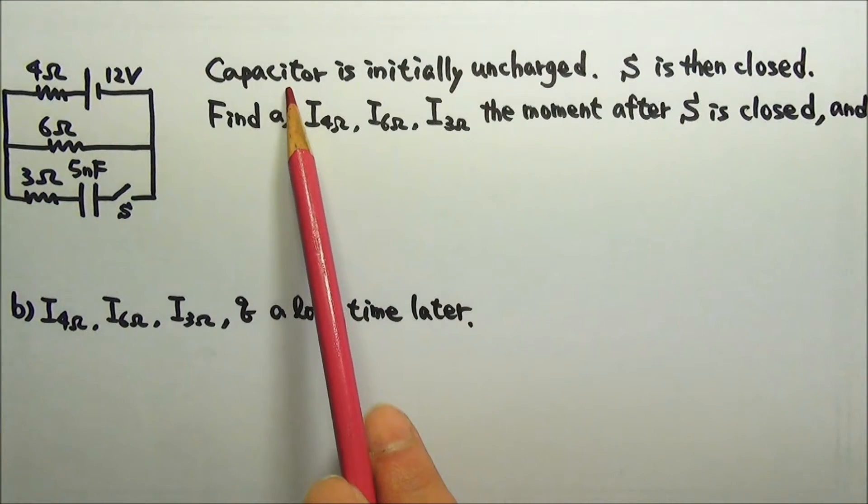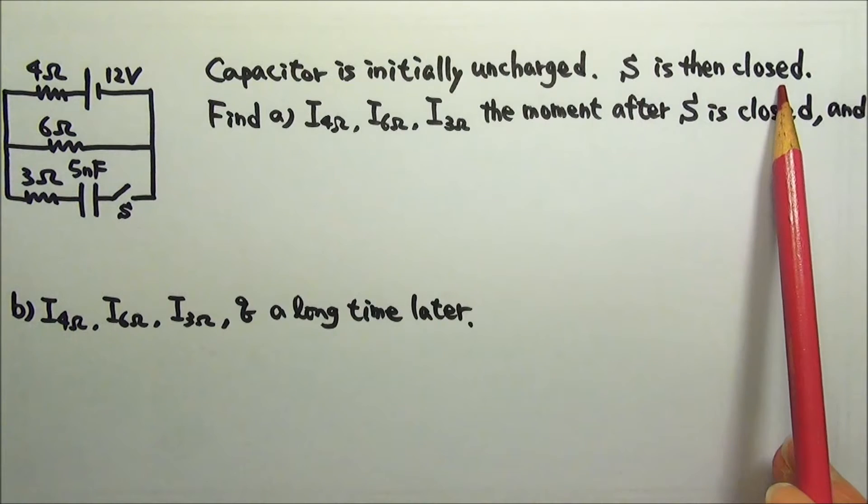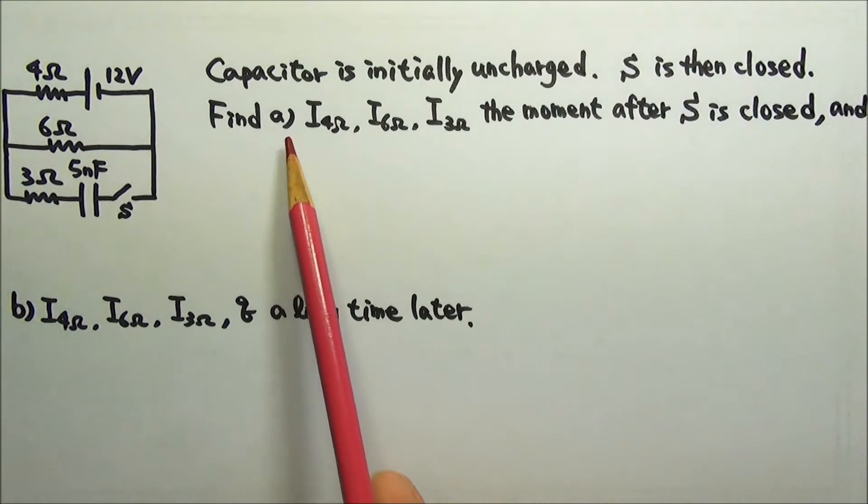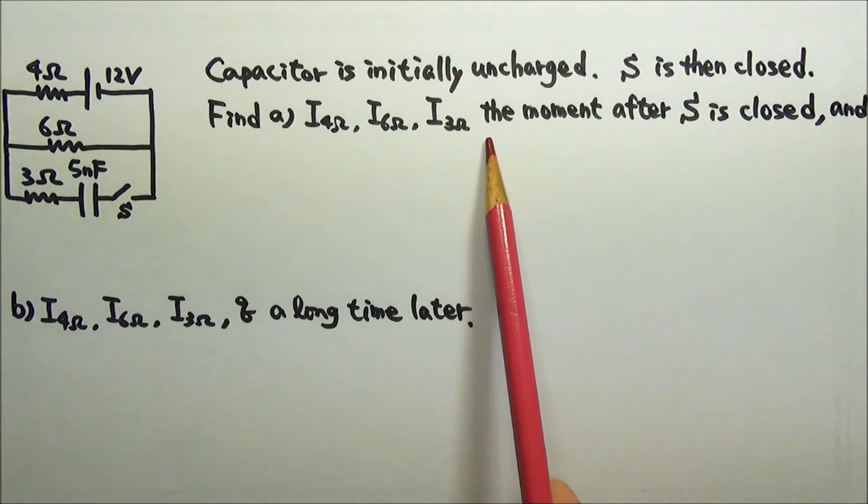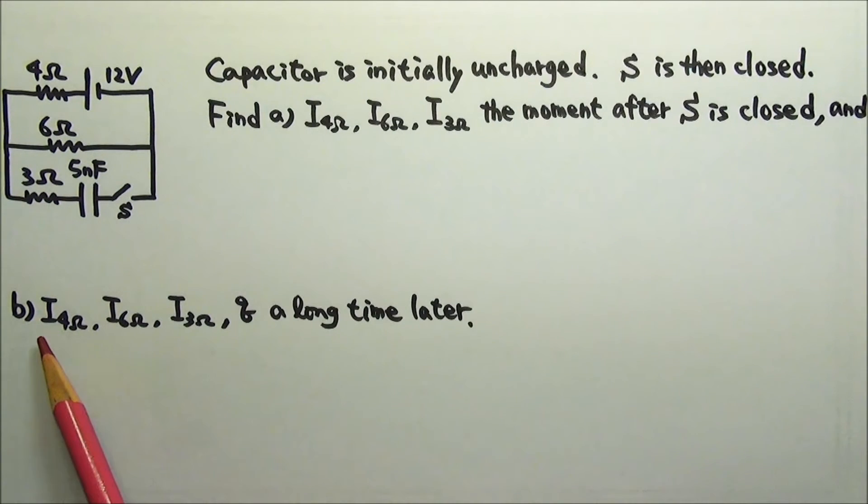In this circuit, the capacitor is initially uncharged. The switch is then closed. Find A, the current in each resistor the moment after the switch is closed, and B, the current in each resistor and the charge on the capacitor a long time later.